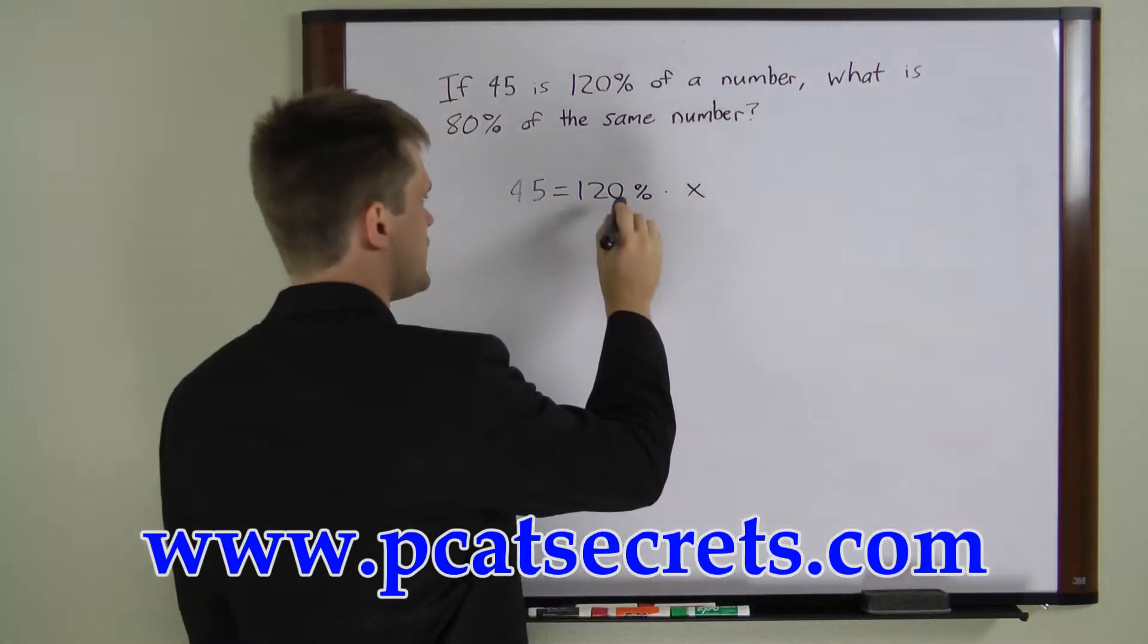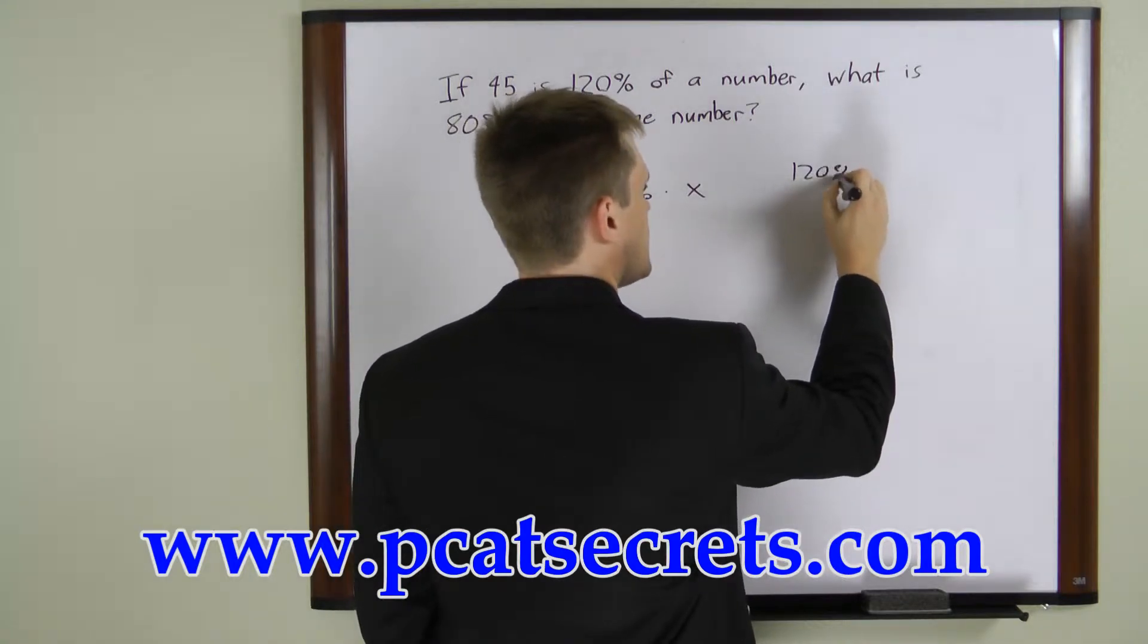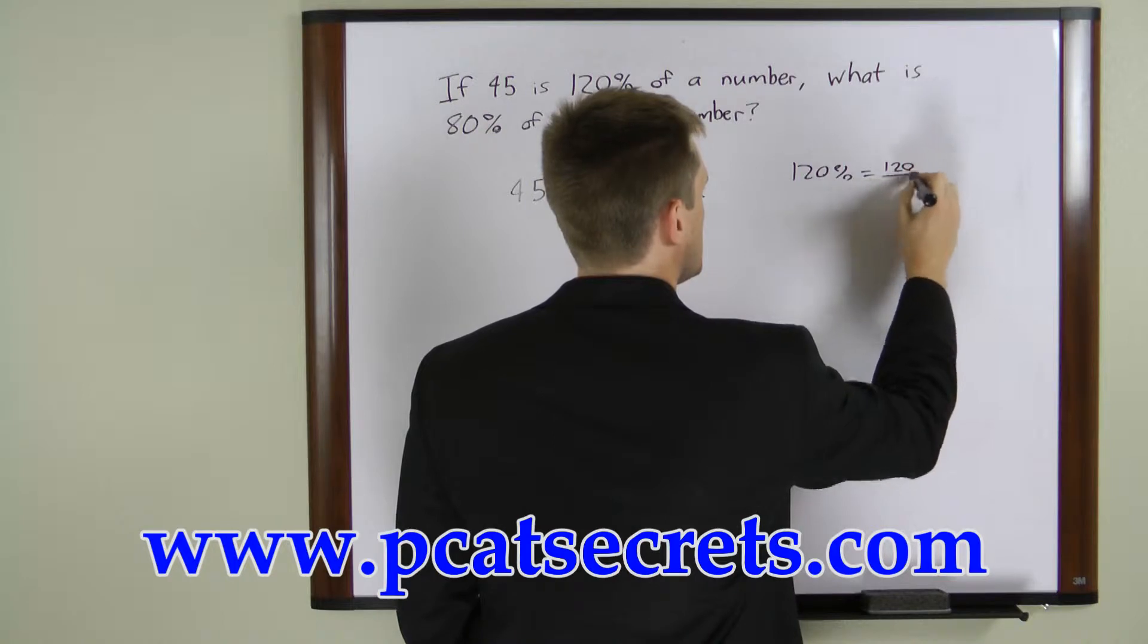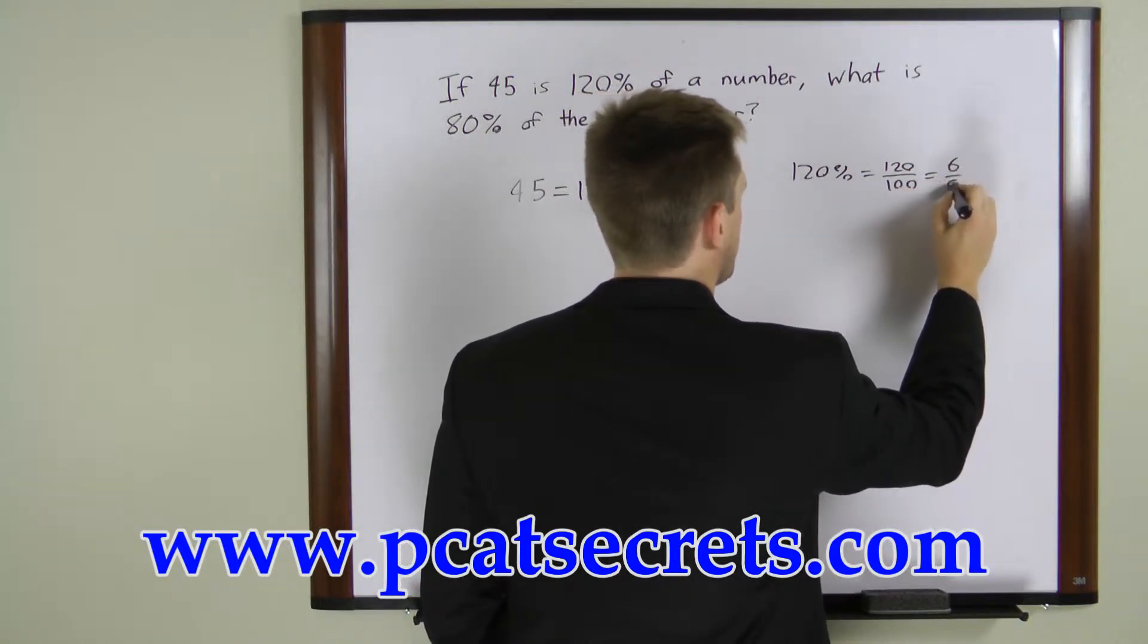Now to solve this, we want to convert the 120% to a fraction. So let's do that. 120% is 120 over 100 which is the same as 6 over 5.